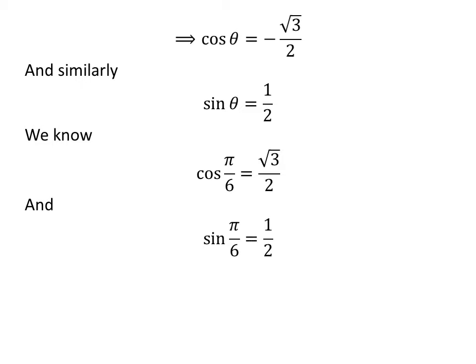As value of cosine of theta is negative and value of sine of theta is positive, so theta lies in second quadrant. We know cosine of pi upon 6 is square root of 3 upon 2 and sine of pi upon 6 is half.